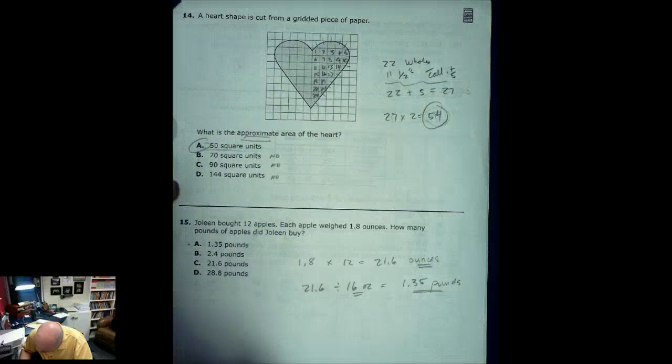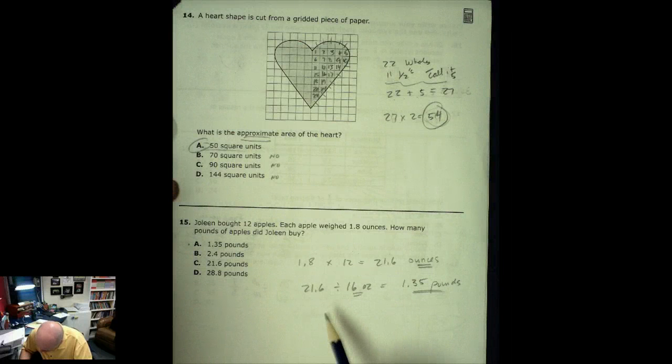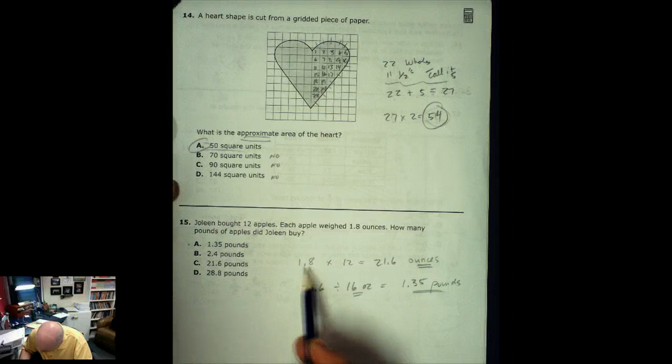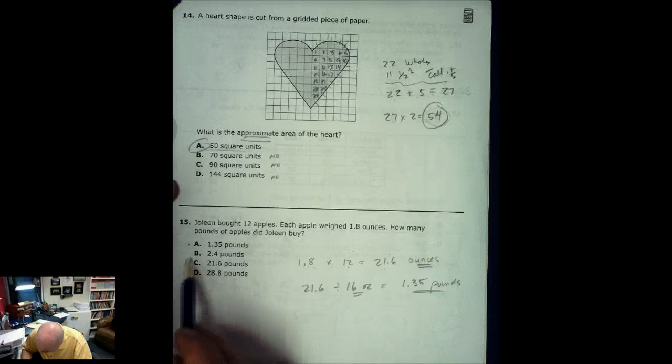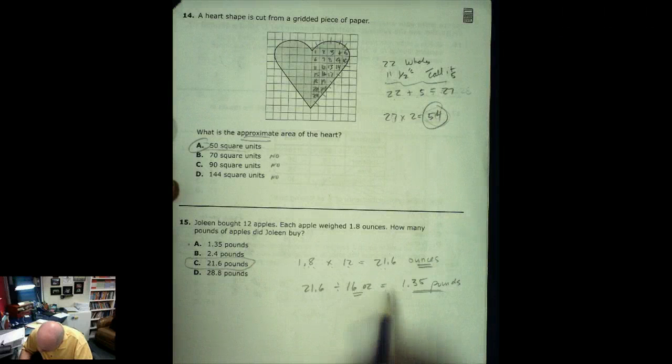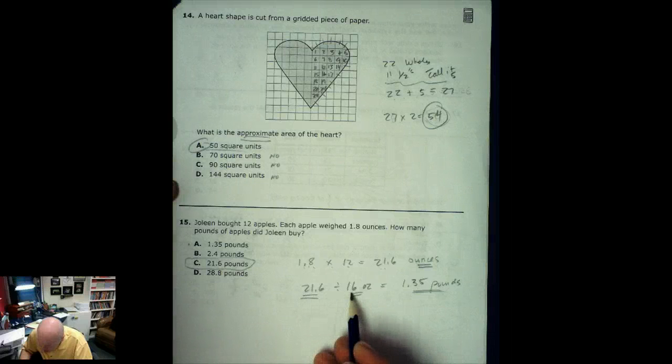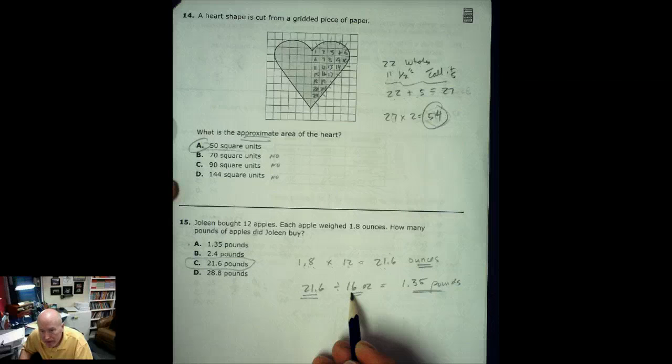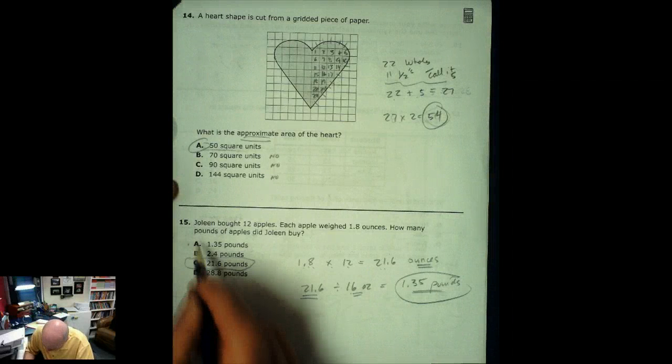Jolene bought 12 apples. Each one weighed 1.8 ounces. How many pounds? Well you got the 1.8 ounces times the 12 gave you 21.6 and here's that answer over here. They want you to choose that, but you have to remember that you have to divide the ounces by 16 ounces per pound to get that 1.35 pound answer which is the correct answer A.